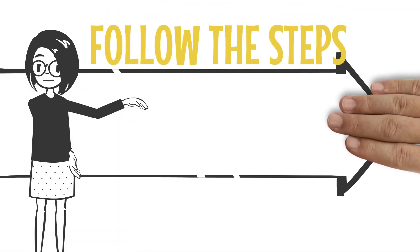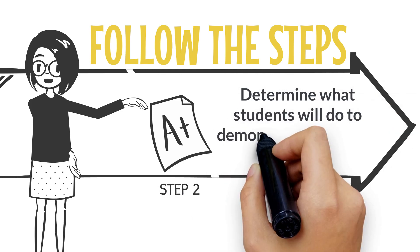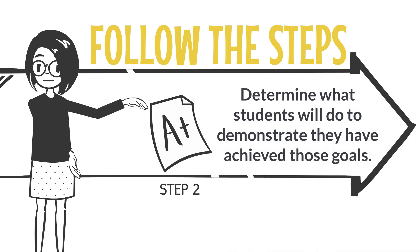Once you've got your goals to guide you, step two of backwards course design is to determine what students will do to demonstrate that they've achieved those goals. In other words, what kind of assessments, formative and summative, will you use?